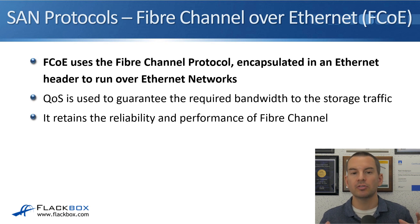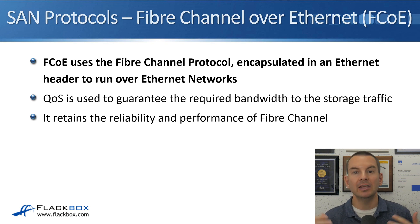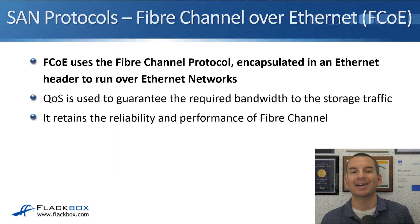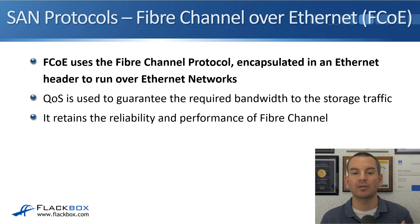FCoE uses the Fibre Channel Protocol, FCP, exactly the same as Fibre Channel does, but it's encapsulated in an Ethernet header so that it can run over Ethernet networks rather than over physical Fibre Channel networks. QoS, Quality of Service, is used to guarantee the required bandwidth to the storage traffic so it gets the service that it requires. And FCoE retains the reliability and performance of Fibre Channel because it works the same way.